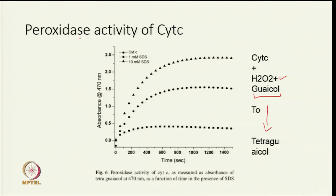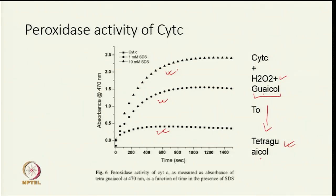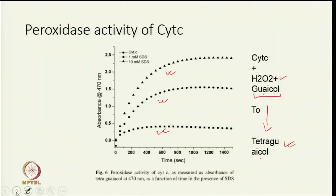The peroxidase activity of cytochrome C can also be examined. H₂O₂ and guaiacol are added, producing tetra-guaiacol which absorbs at 470 nm. If cytochrome C is active, it converts guaiacol to tetra-guaiacol. With 1 mM and 10 mM SDS added, absorbance at 470 nm increases compared to cytochrome C alone, showing increased peroxidase activity — all observable via UV visible spectroscopy.